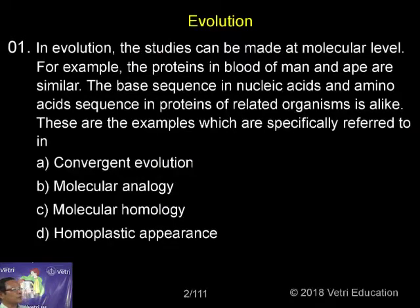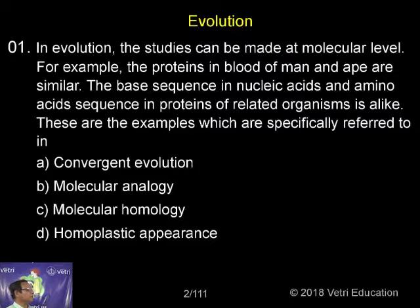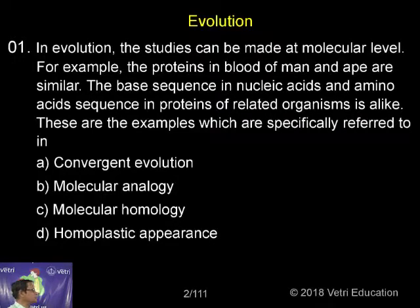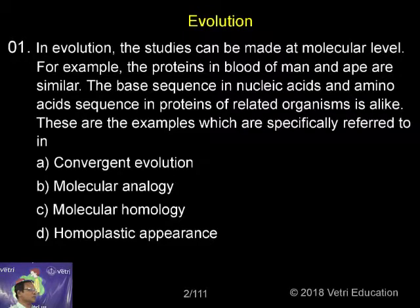In evolution, studies can be made at the molecular level — this is called molecular evolution. For example, the proteins in the blood of man and ape are similar. The base sequences in nucleic acids and amino acid sequences in proteins of related organisms are alike. This is called the evolutionary relationship based on molecular genetics.